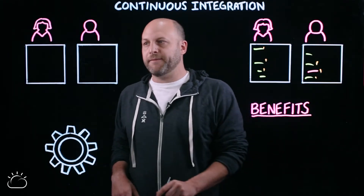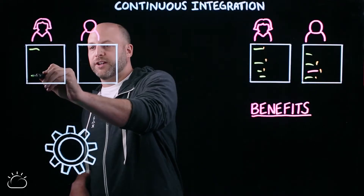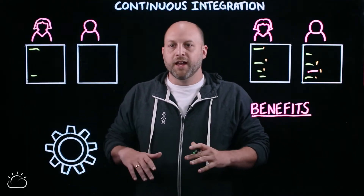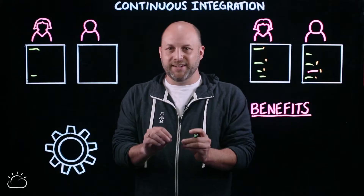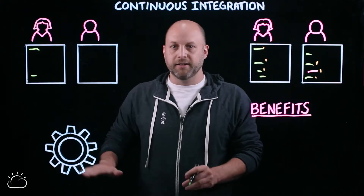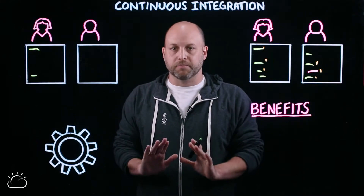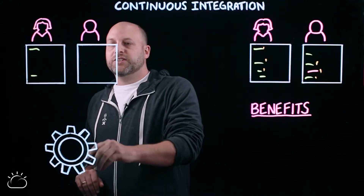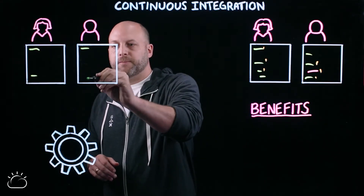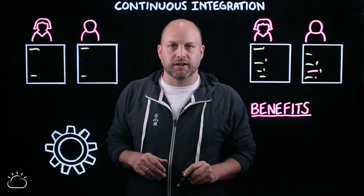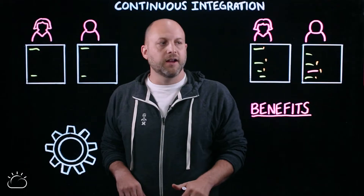We start, and we'll have Alice writing some code again. As soon as she has something that works even a little bit — her feature is not done, but she's got code that works and doesn't break things — she submits that into source control. Bob pulls down the same code before he starts working; he's always working off the latest. Alice is always submitting hers in.